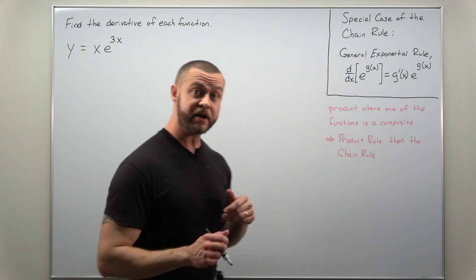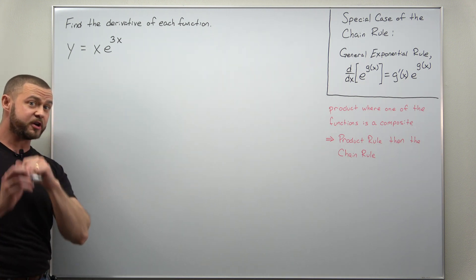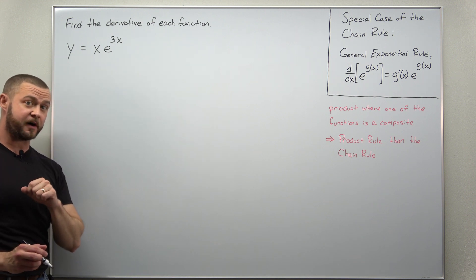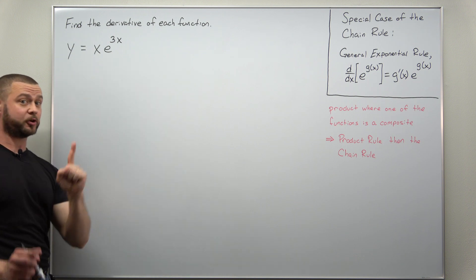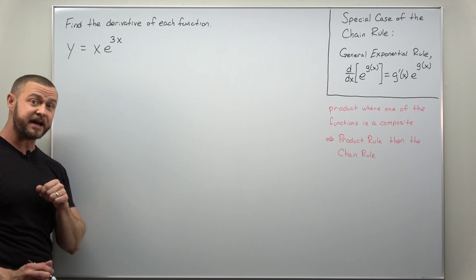Let's take a look at our function here so we can see in which order we might want to apply them. We have x times this exponential function. So we have a product, but notice the exponential is a composite—we have e but 3x is plugged inside of that.